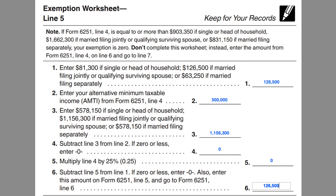If your line 4, at the end of Part 1, is equal to certain thresholds, then you don't need to bother completing this worksheet because your exemption will be equal to zero. Those thresholds include, for single or head of household taxpayers, $903,350. For a married couple filing a joint return or a qualifying surviving spouse, $1,662,300.